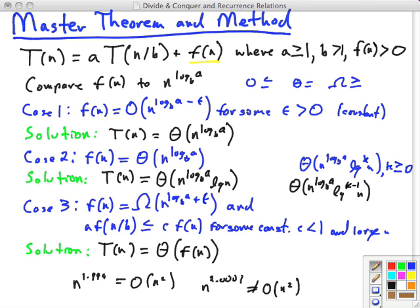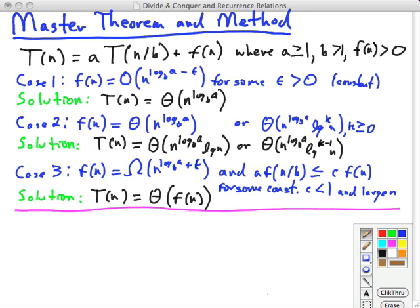So I've rearranged things here to make some room for examples. Our first example will be this. So what do you do when you're confronted with a recurrence relation like this? We need to know what b and a are so we can compare f(n). We need to know what f(n) is as well. So we need to identify a, b, and f(n) so that we can use them in these comparisons, f(n) compared to n log base b of a. So let's look in here. a is 5, b is 2, and f is n squared.